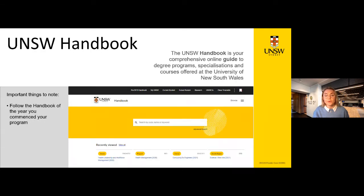The UNSW Handbook is your ultimate guide for your programme, including your programme requirements and rules, which are really important to be aware of, as well as information on majors and courses offered at UNSW. The information provided is up-to-date and accurate for the current year, though information can change in future years — for example, which term a course is offered can change between years.